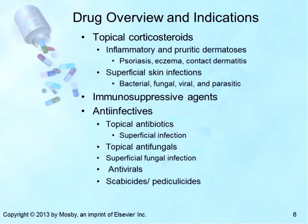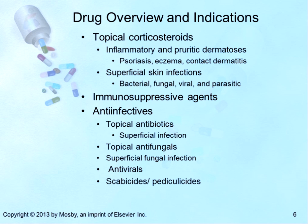Topical corticosteroids are indicated for inflammatory and pruritic dermatoses that are responsive to corticosteroids, such as psoriasis, eczema, and contact dermatitis. Toxicity of topical corticosteroids, although not common, is the same as toxicity that occurs when corticosteroids are given systemically. Other common adverse effects include atrophy, striae, telangiectasia, purpura, acne, perioral dermatitis, and steroid rosacea. Glaucoma and cataracts may develop after prolonged use around the eyes. The risk of side effects is increased when topical corticosteroids are used over a prolonged period, under an occlusive dressing, on the face, or in intertriginous locations.